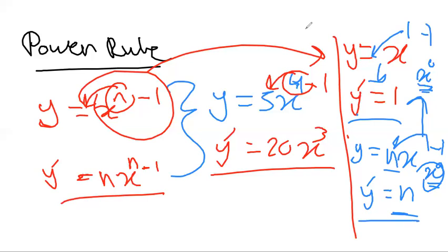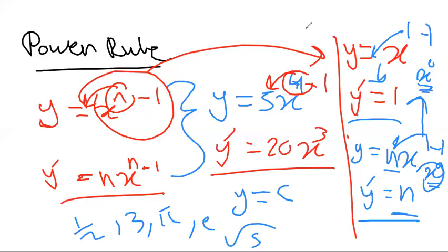Another shortcut: if y equals a constant — such as 1/2, 3, π, e, √5, and so on — the derivative of any constant is 0. Also, we can use the distributive property while differentiating: if a function has more than one term, we differentiate each term individually by itself.